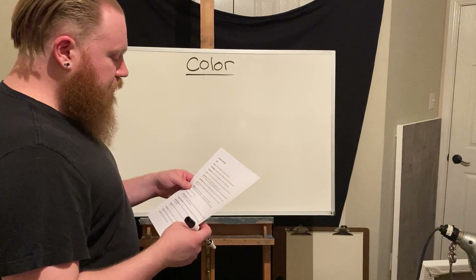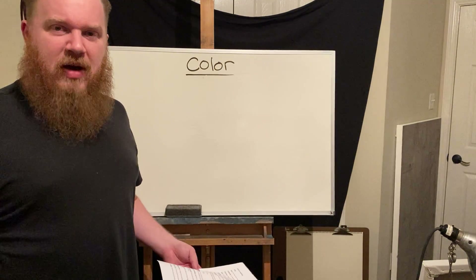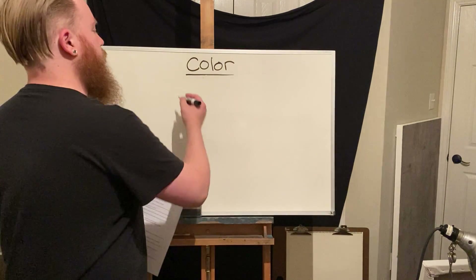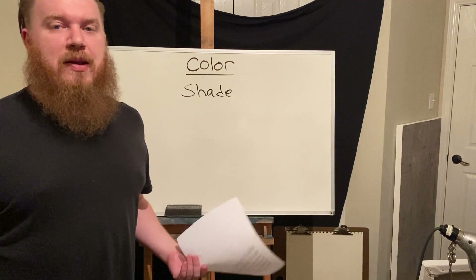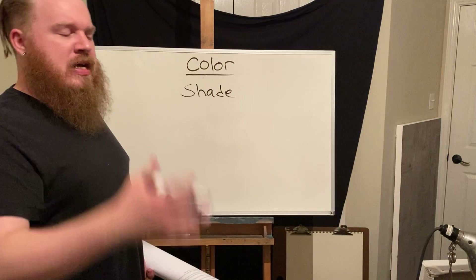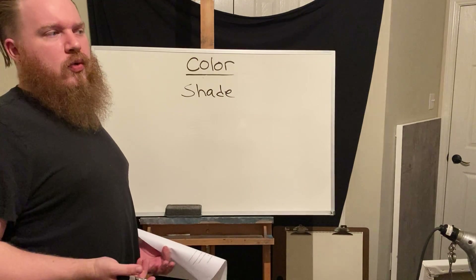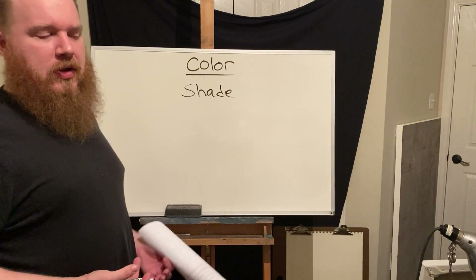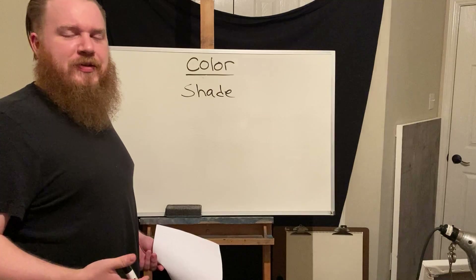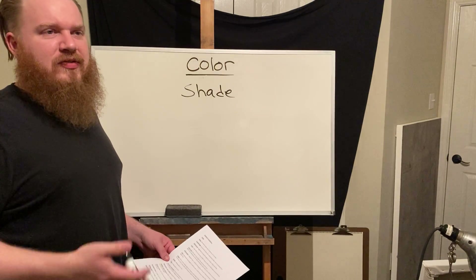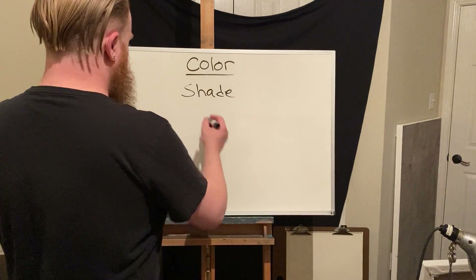Every hue can be influenced by value. One way is through shade — a shade refers to any color that has had black added to it. Adding black to yellow creates a very dark greenish color; adding black to red starts to create a burgundy or blood-red kind of color. We can make a deeper, richer dark blue by adding black to blue as well.